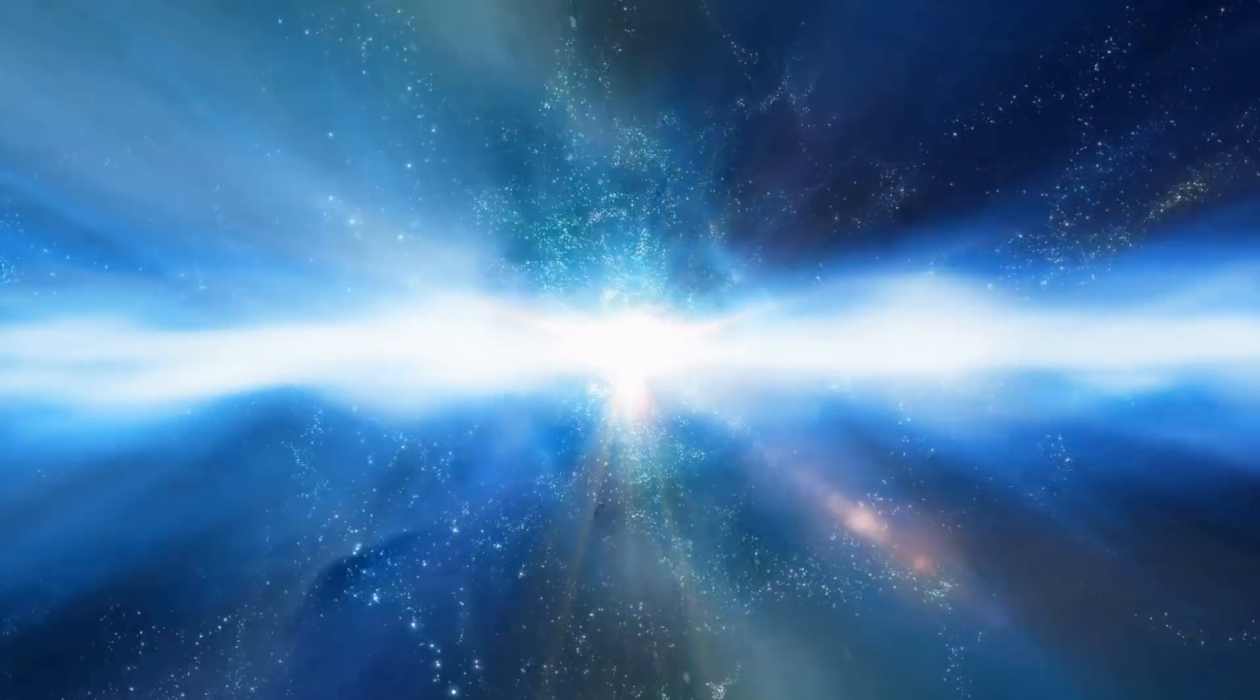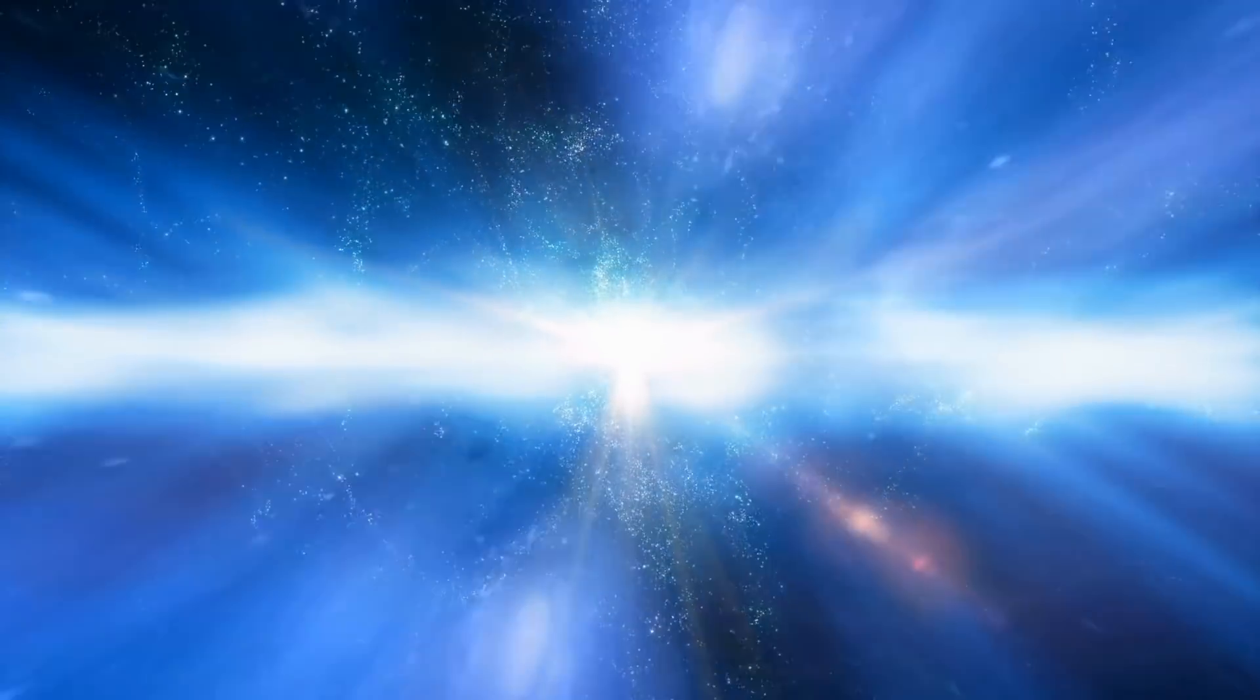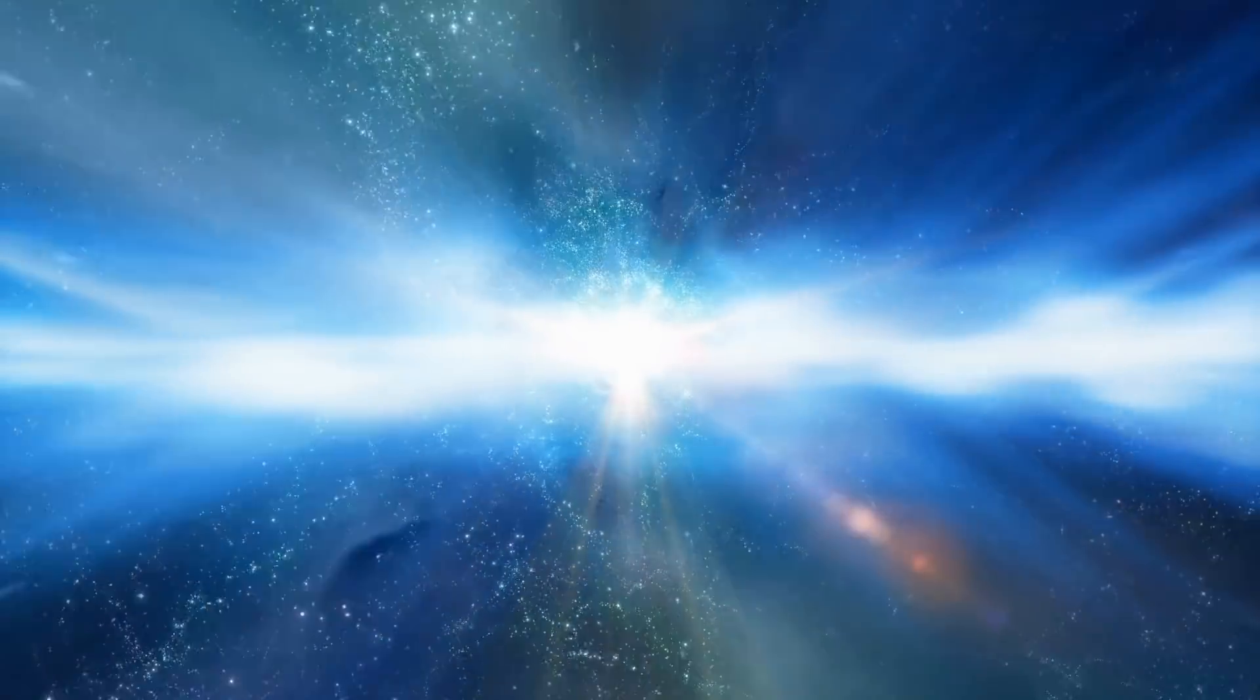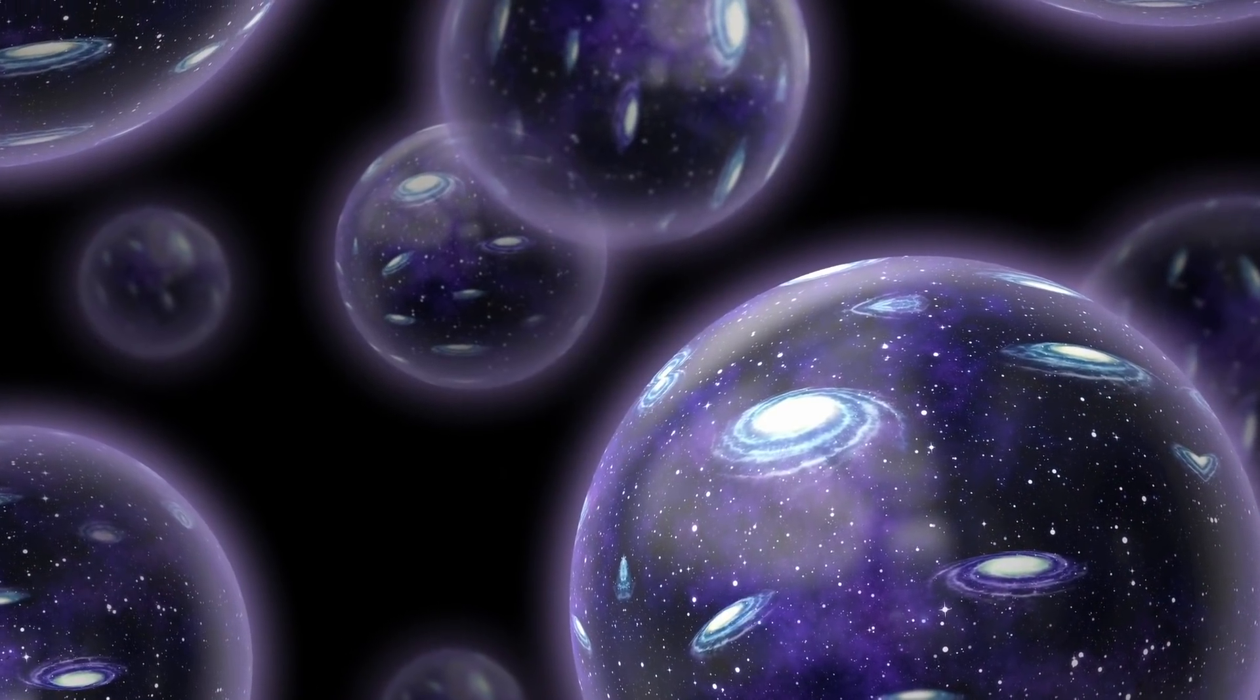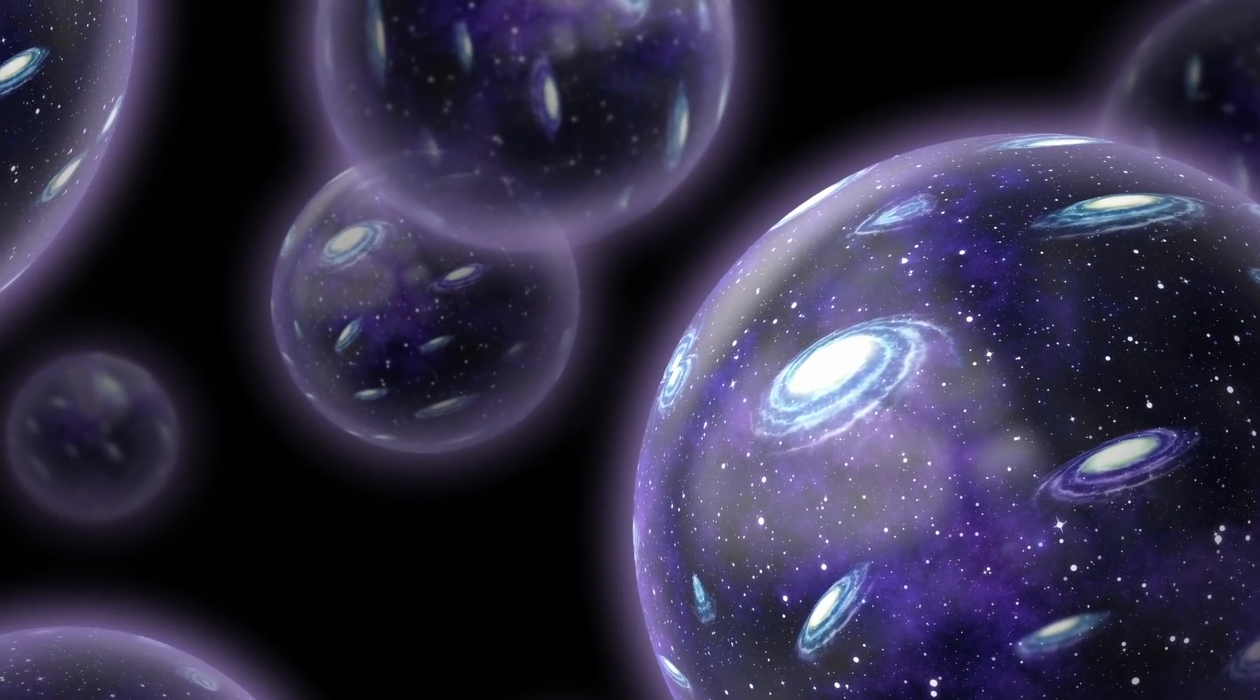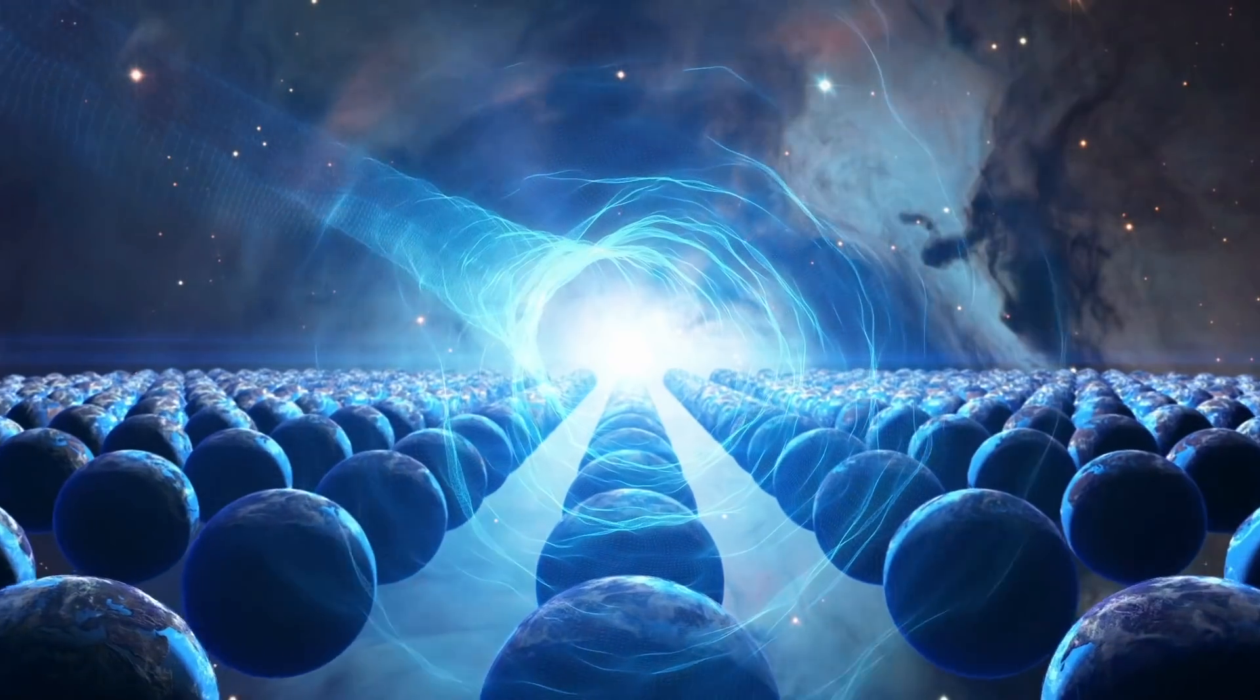That theory also predicts that the universe doesn't all stop at once. In fact, it almost naturally predicts that the universe stops in a small patch and you get a Big Bang, and then the rest of it carries on. You get another small patch, another Big Bang, another small patch, another Big Bang. And it leads to this picture called the inflationary multiverse, where the suggestion is that there could be an infinite number of universes.